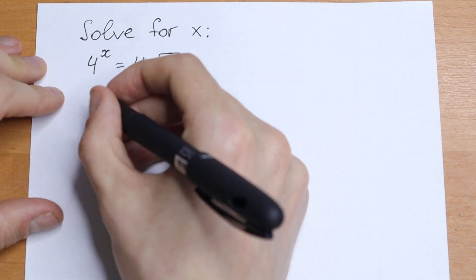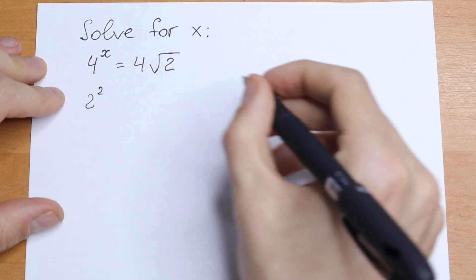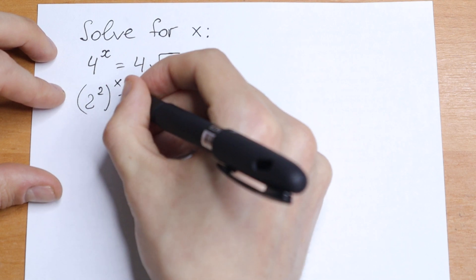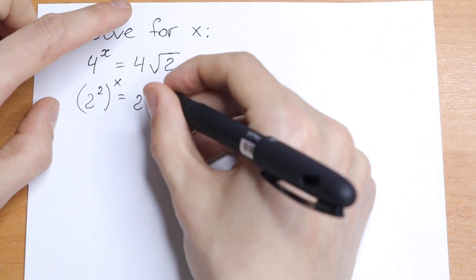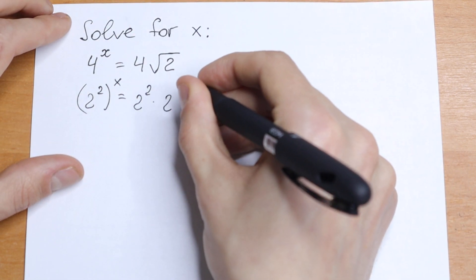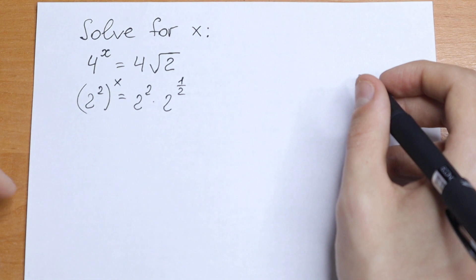So this 4 is equal to 2 squared and of course raised to the power x. And on the right we will have the same - we will have 2 squared times 2 to the power 1 half because we have the square root sign. So 2 to the power 1 half.